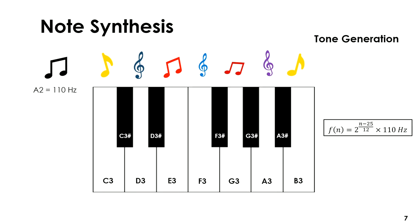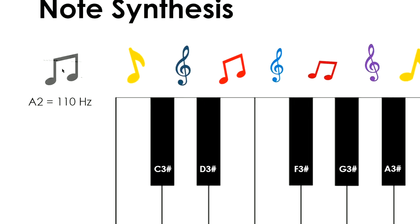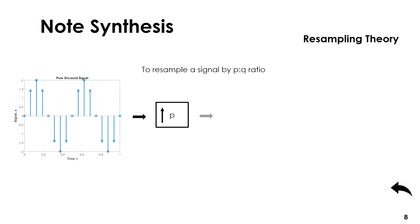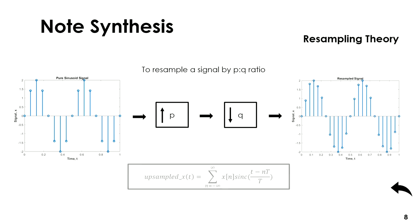The frequency of a target note with respect to the base note A2 is defined by a given equation. An audio tone can be resampled by first upsampling it by a ratio of P and then downsampling by Q. Upsampling is done using the sinc function, where the sample values are generated by a defined formula.